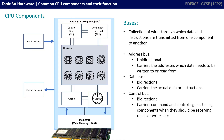We then have the data bus. This is bidirectional and it carries the actual bits — the ones and zeros — that represent the data or instructions. These can come from the CPU and head off to memory, or they can come from memory and come into the CPU.